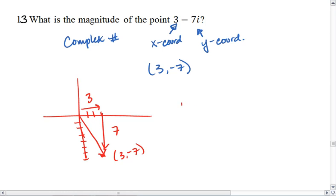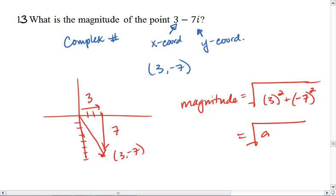So we get that the magnitude equals the square root of 3 squared plus negative 7 squared, which is the square root of 9 plus 49, is the square root of 54.